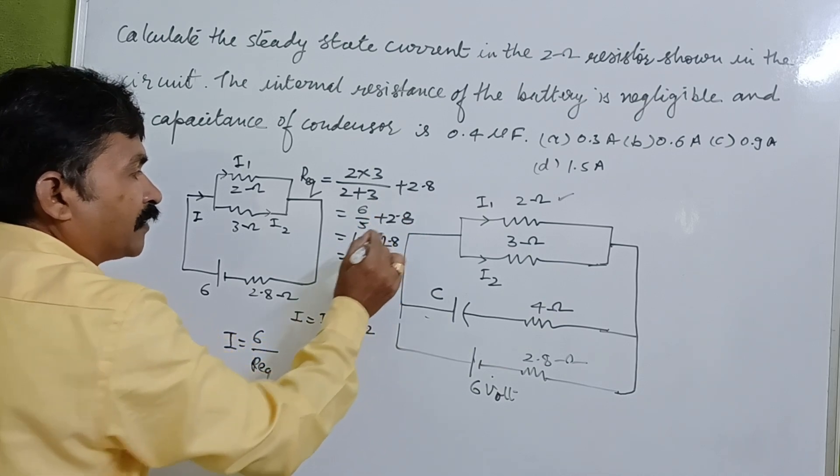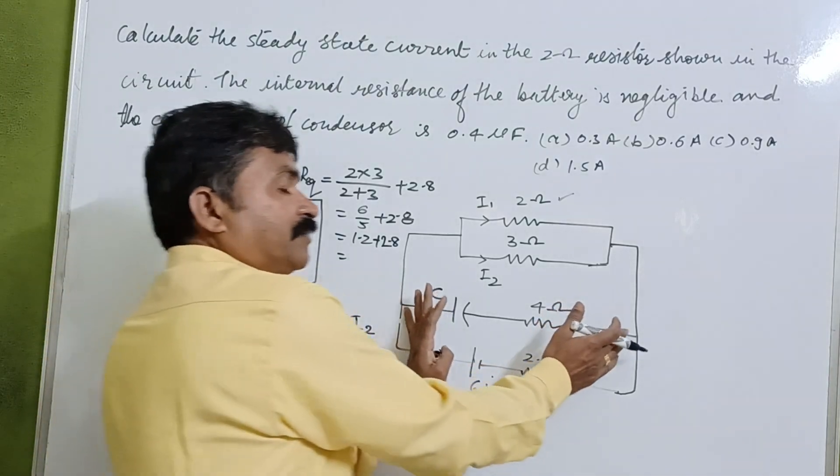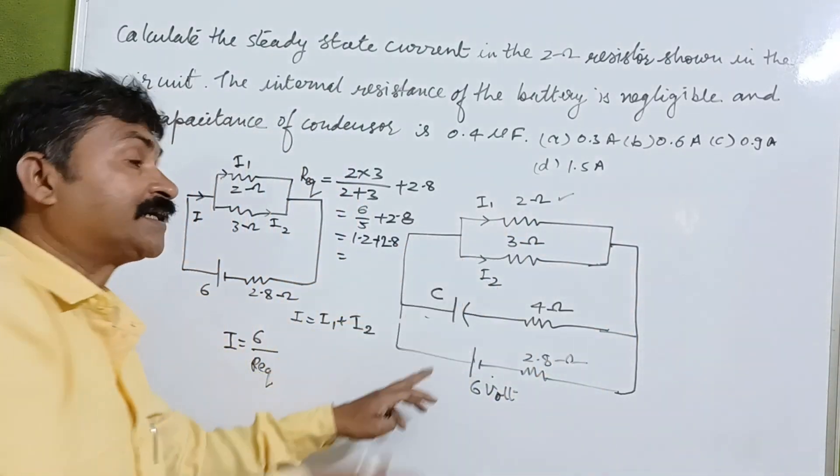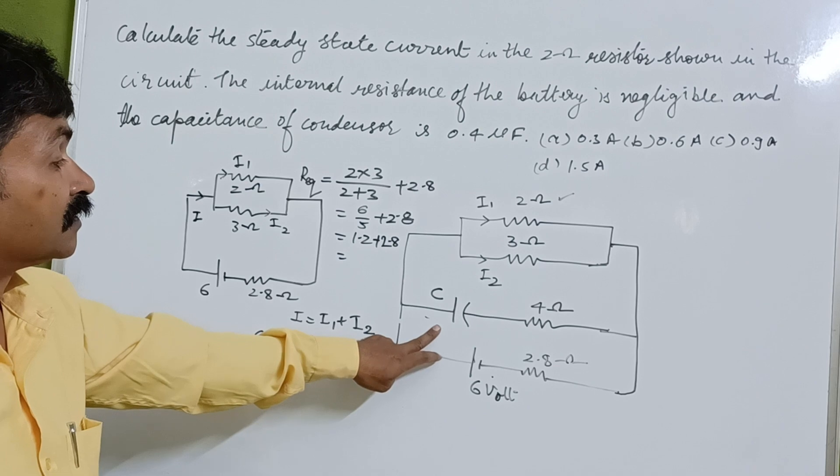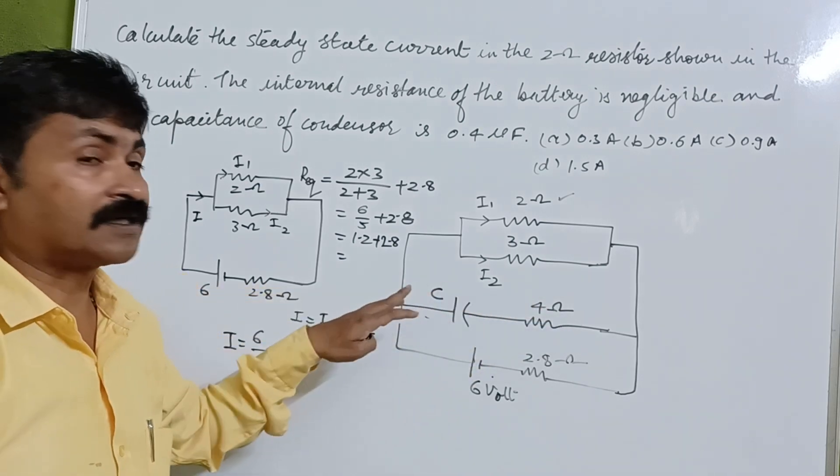So here we can see that under steady state current there is no current in this branch.